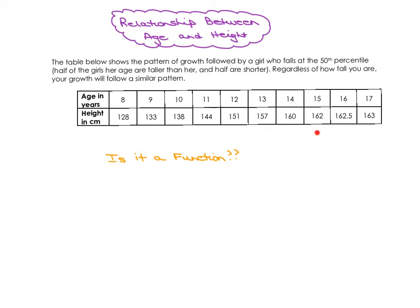This table shows the pattern of growth of a girl who falls in the 50th percentile. So, for example, if we look at age, come over when she's 13, we can see that her height was 157 centimeters.